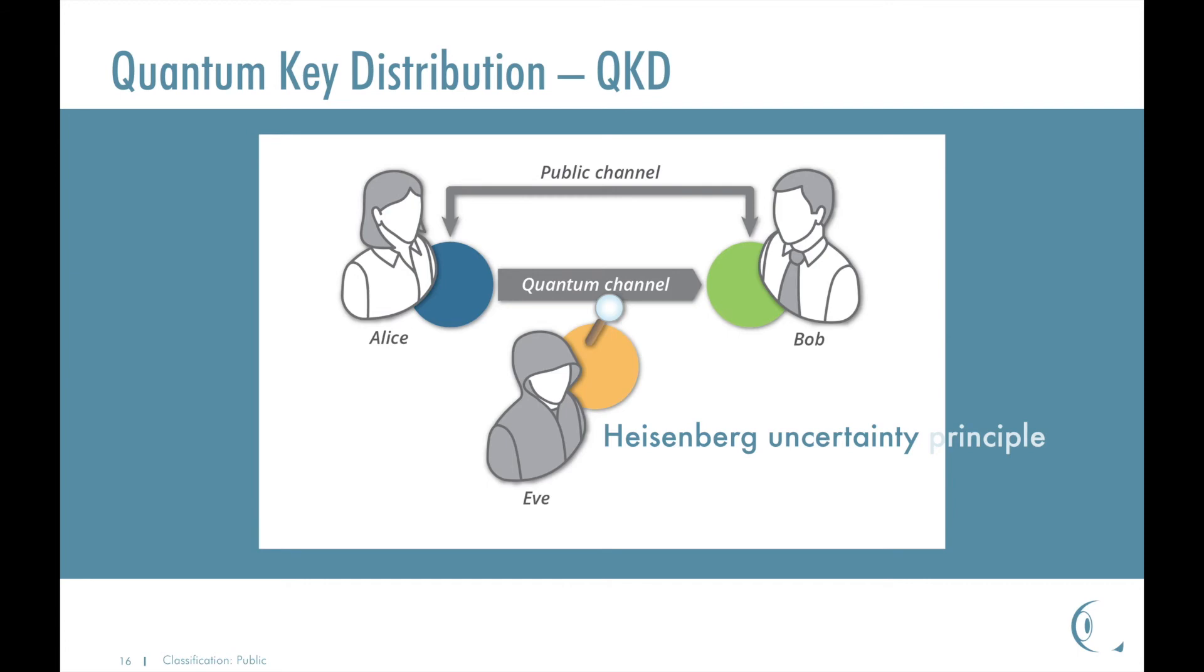Quantum key distribution is a method used in order to produce a perfectly random key which is shared by a sender, let's say Alice, and the receiver, let's call it Bob, while making sure that nobody else has a chance to learn about the key, that is, by eavesdropping the communication channels used during the process. The security of quantum key distribution relies on a fundamental characteristic of quantum mechanics. The act of measuring a quantum system disturbs the system. This is called the Heisenberg uncertainty principle.